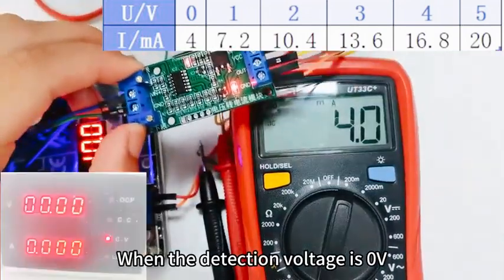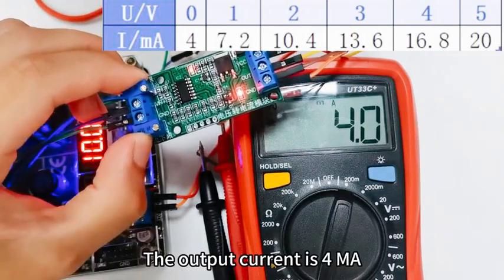When the detection voltage is 0 volts, the output current is 4mA.